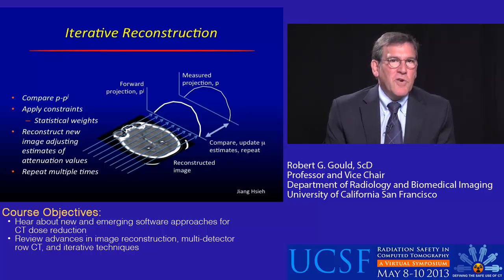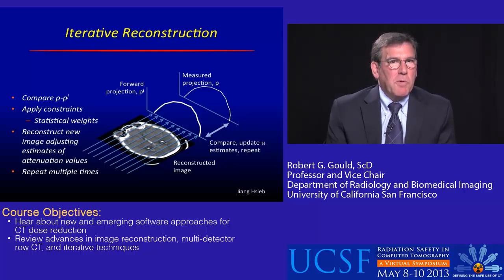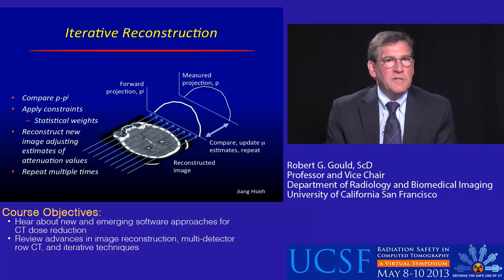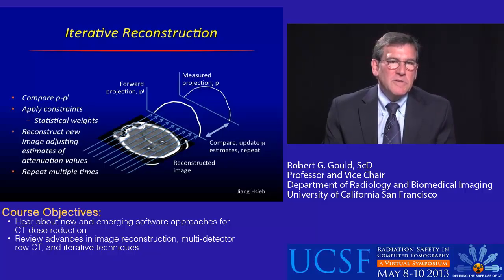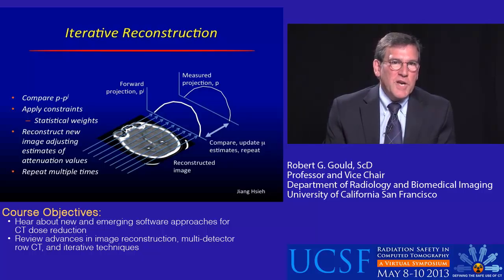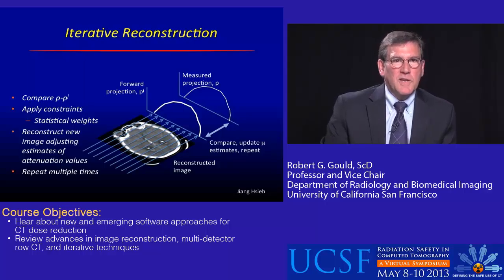What you're trying to do is minimize those differences between the forward projected and the measured data. You apply constraints — statistical weights. You reconstruct a new image, adjusting the estimates of attenuation values, then do the forward projection again and compare those to the measured projection data.